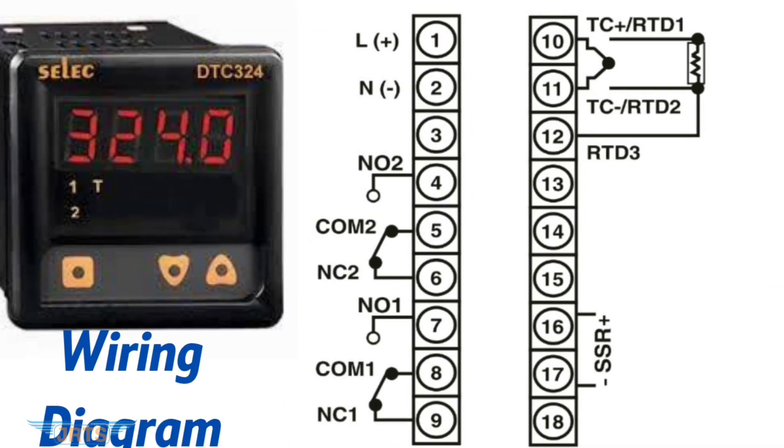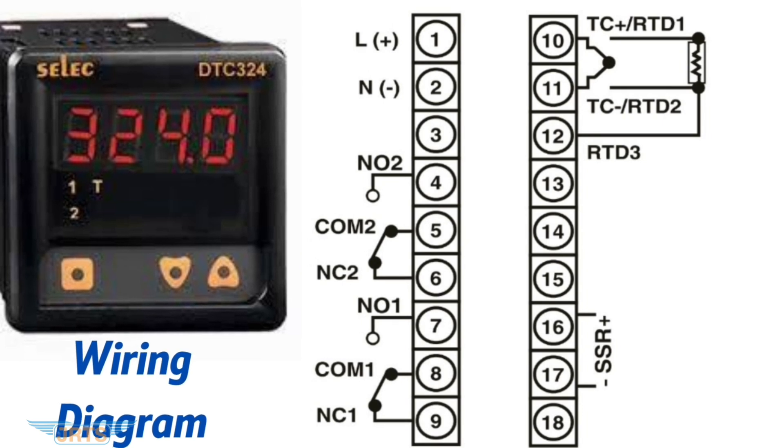This is the wiring diagram of SELECT DTC324. Pin 1 and 2 is for line and neutral, 16 and 17 for SSR, and pin 10, 11,